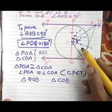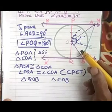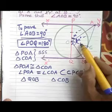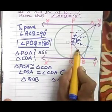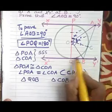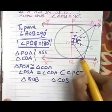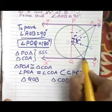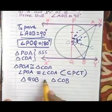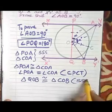Because OC is a radius, OQ is also a radius, so these two are equal. OB equals OB — common side. From the external point B, BQ and BC are equal because they are two tangents from the same external point. So these two triangles are congruent by SSS rule.